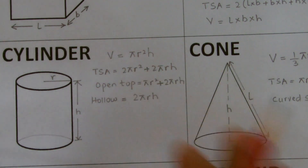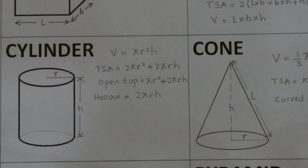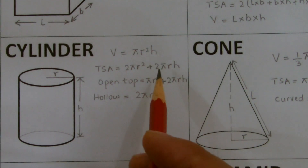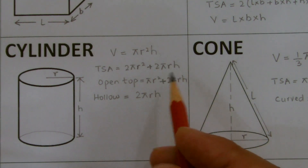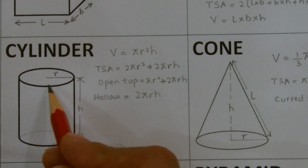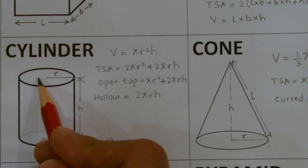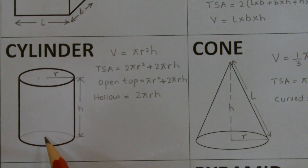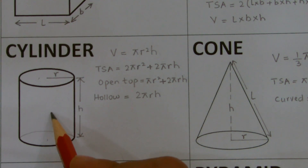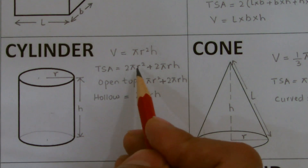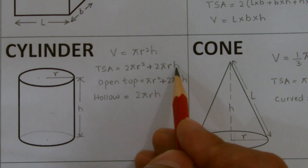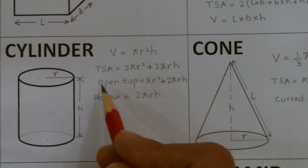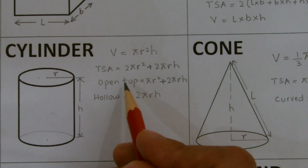For a closed cylinder — for example, a cold drink can — the total surface area includes the area of the circle at the top (πr²), the area of the circle at the bottom (πr²), and the curved surface area (2πrH). Adding these together gives the total surface area as 2πr² + 2πrH.